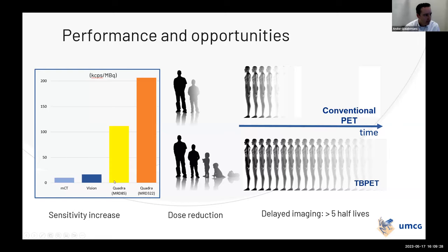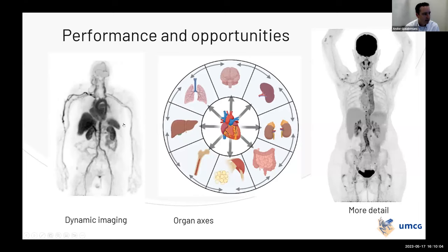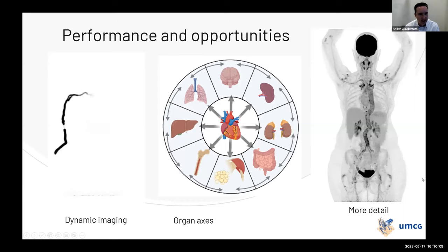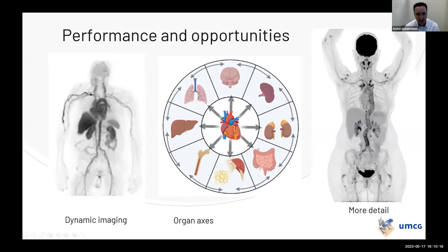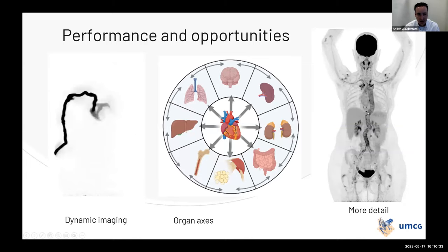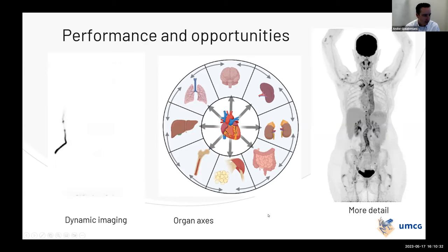We assessed the performance and observed a very increased sensitivity compared to the digital PET-CT Vision and the conventional MCT Biograph PET-CT. We examined dose reduction and its use in children and infants, and also investigated delayed imaging — potentially scanning for more than five half-lives. For dynamic imaging it's a wonderful machine because all organs are in the field of view. In large vessel vasculitis, the Quadra reveals details distinguishing inflammation from atherosclerosis.